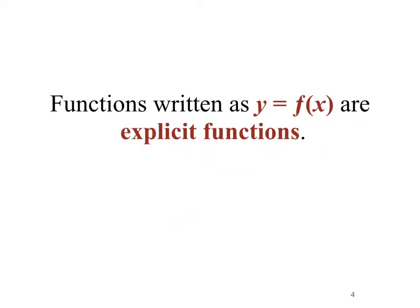Functions written as y equals f of x are explicit functions. For example, we might have a function like y equals x squared times e to the x. Here y is described solely by the variable x, so y is dependent upon x and we're able to solve for y explicitly.